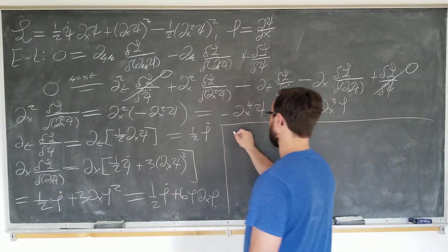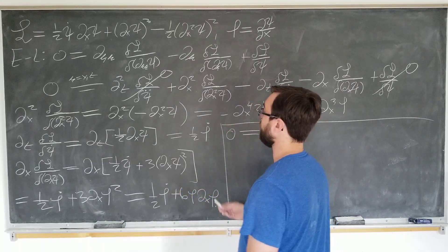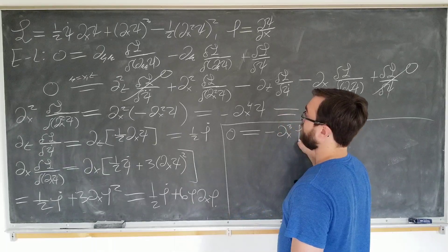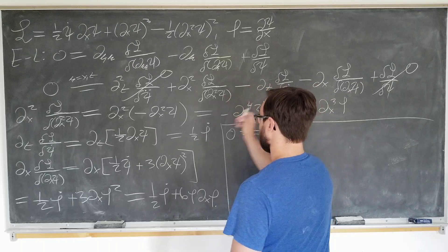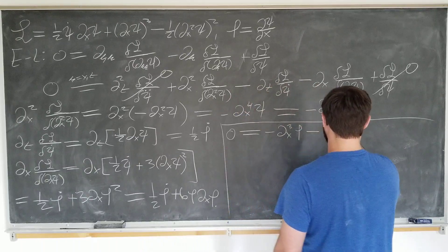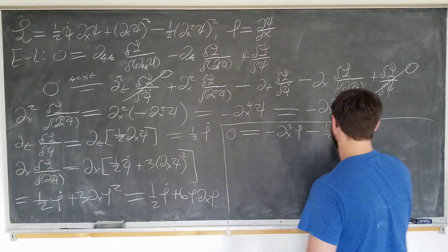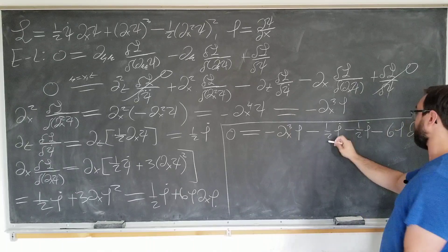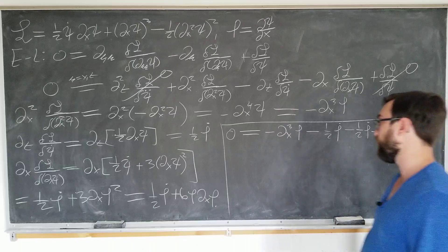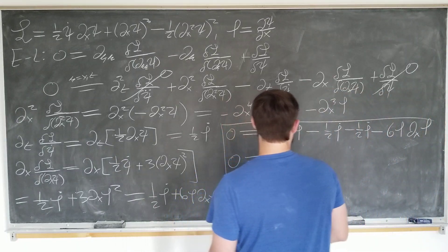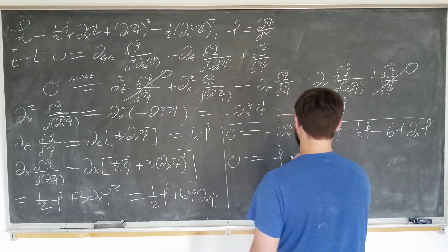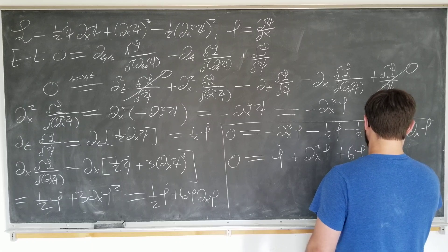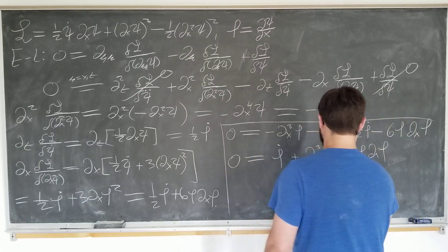Okay. The Euler-Lagrange equation tells us that zero is equal to, first term here, minus dx cubed of phi. This term minus all the other terms. So we got minus one-half phi dot from this term. This term gives us minus one-half phi dot minus six phi dx phi. These two combine. We can multiply everything by minus one to obtain our final expression. Zero is equal to phi dot plus dx cubed of phi plus six phi dx phi, which is just the KDV equation. Excellent.